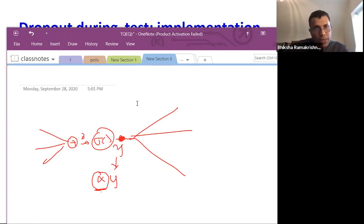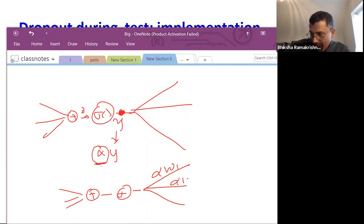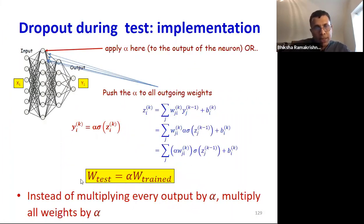Alternately, what we can do is instead of multiplying this guy by alpha, we can multiply the outgoing weights by alpha, and both of these are valid ways of dealing with dropout during inference time.